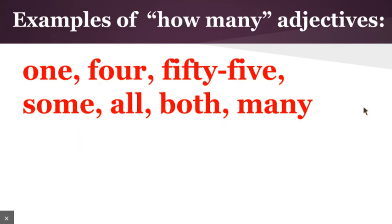And then the last question: how many. So the how many adjectives would be one, four, 55, some, all, both, and many. There are lots and lots of these because we have lots and lots of numbers, so just keep in mind number words can be adjectives.